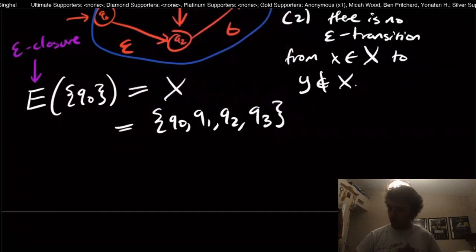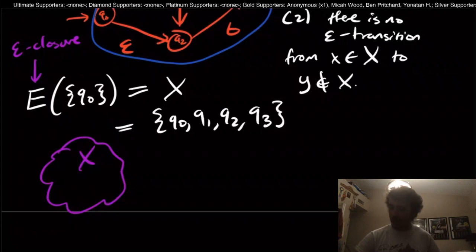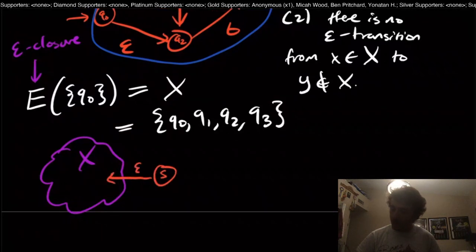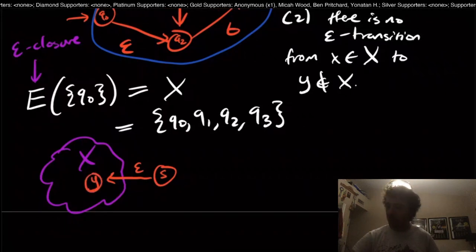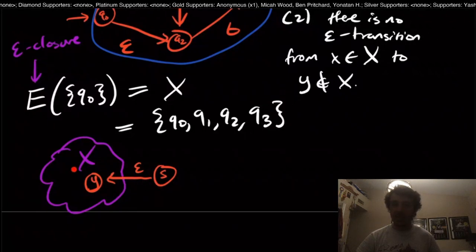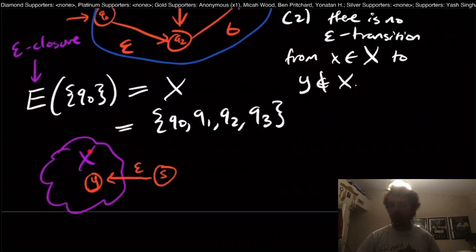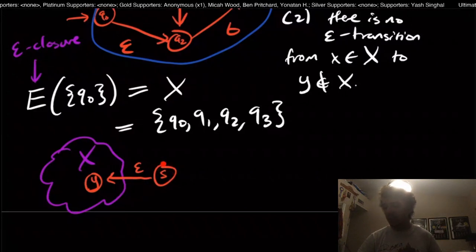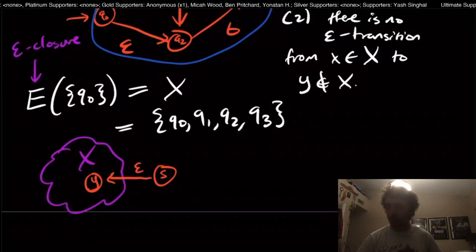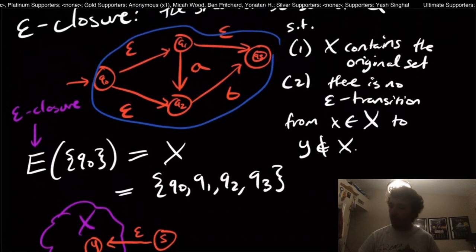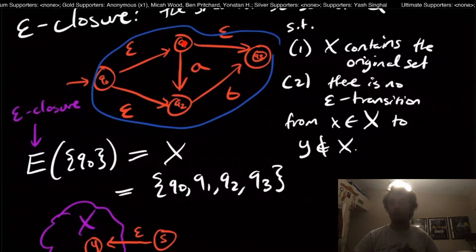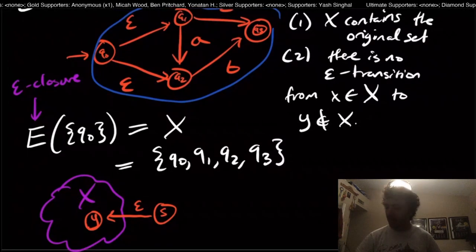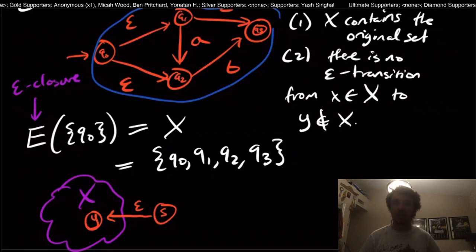OK, so one thing that we should clarify is, suppose that we have this set of states X right here. And let's just say that we have a state S right here that has an epsilon transition into X, to a state Y or something, which is in X. Well, should we include S in the epsilon closure, which is the set X that we're maintaining right here, the blue bubble that we were doing before? And the answer is no, because it may not necessarily be that S is reachable via epsilon transitions only from a state inside X. So the key here to understand is that we only will include a state if the epsilon transition goes outside of the set X, not going into the set X. Because it's not necessarily the case that we can reach this state S via epsilon transitions only.